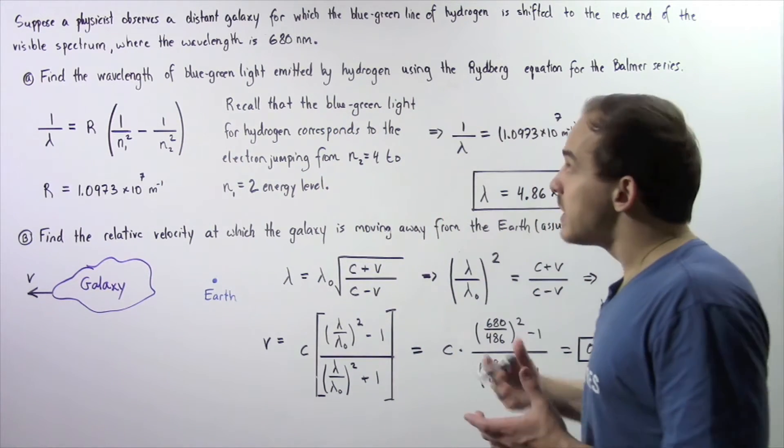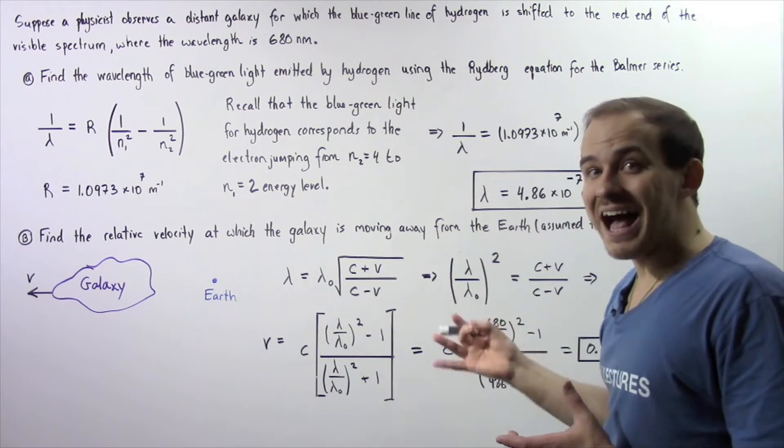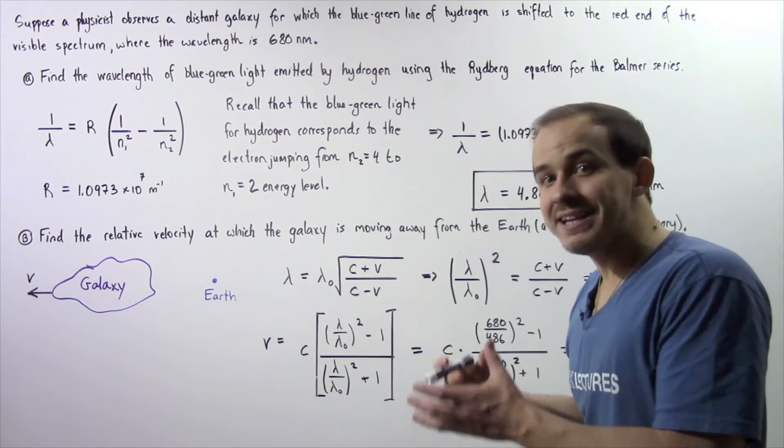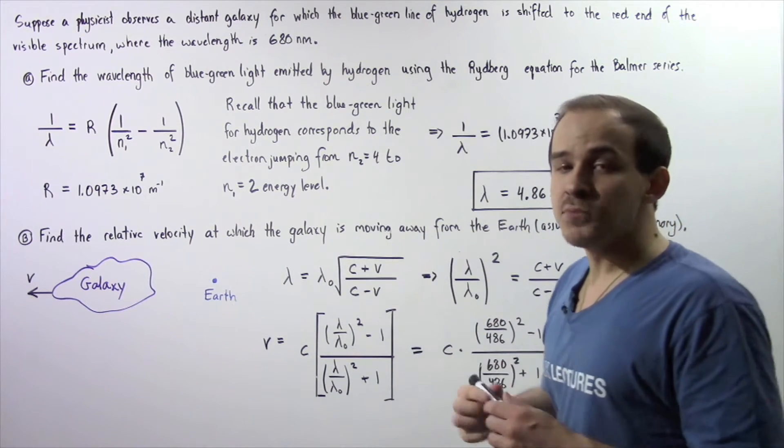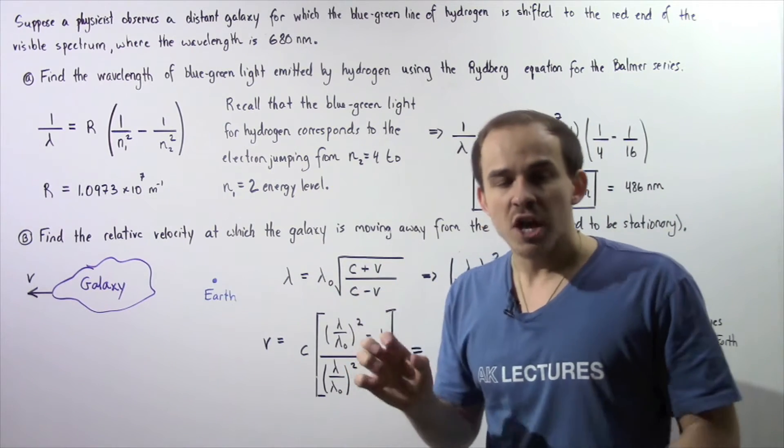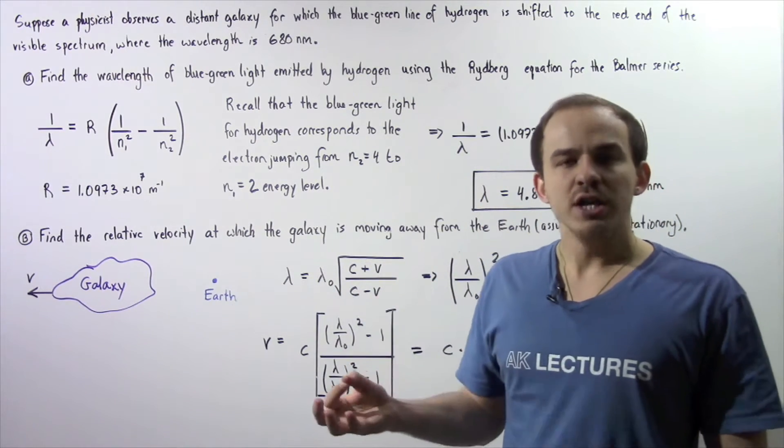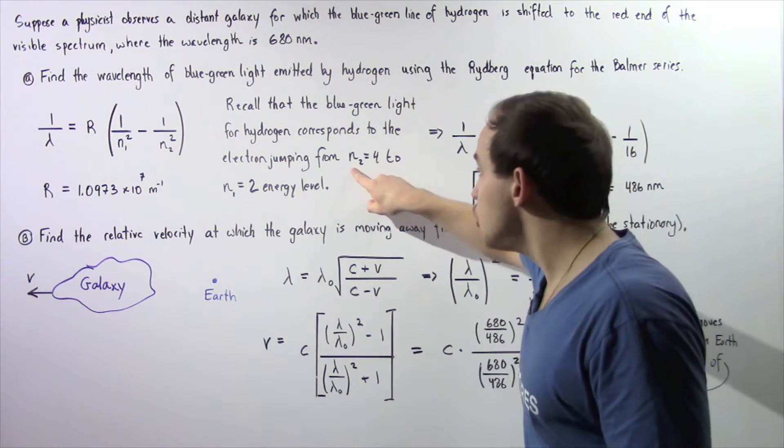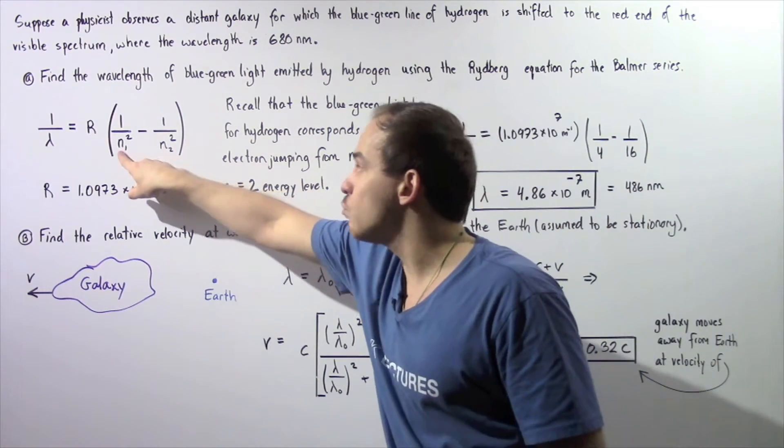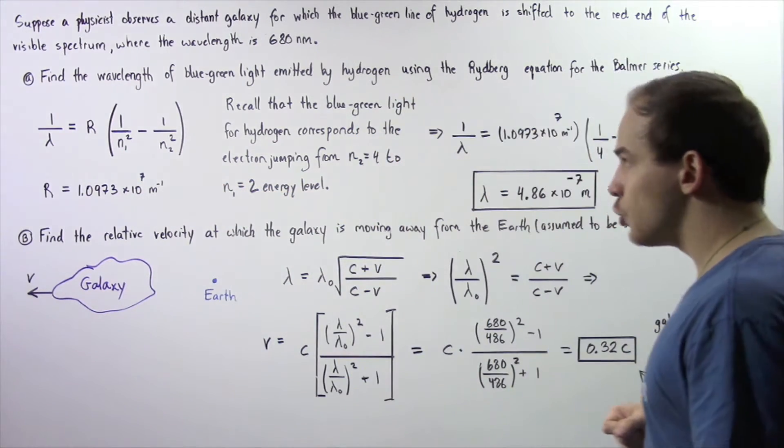Recall that the blue-green light emitted in hydrogen is emitted when the electron jumps from energy level 4 to energy level 2. So N₂ is equal to 4 and N₁ is equal to 2.